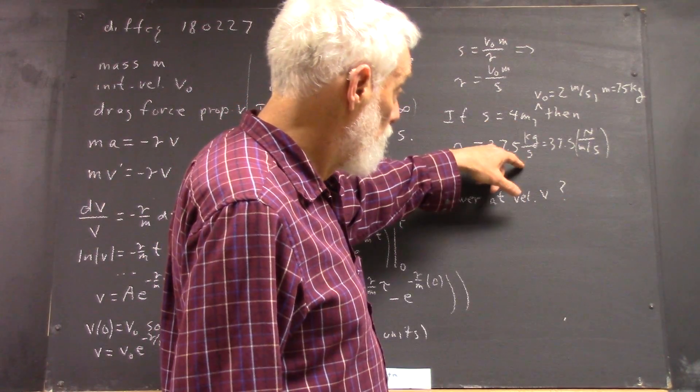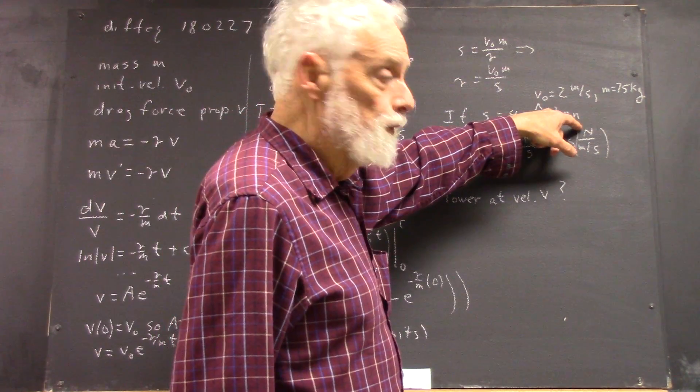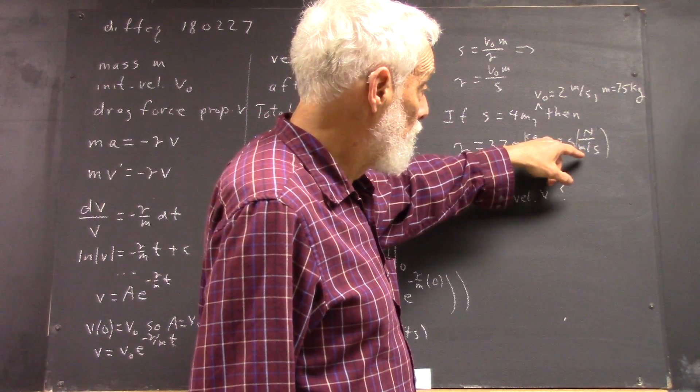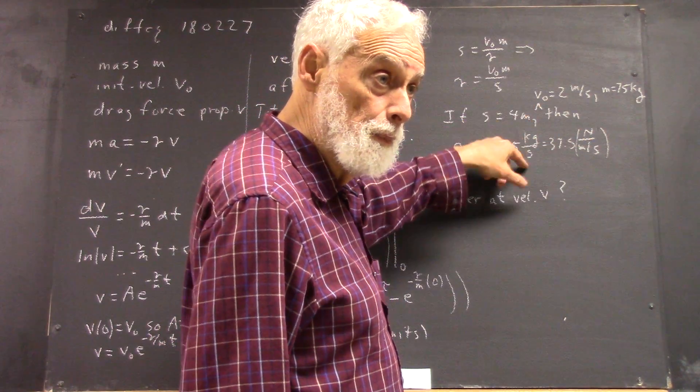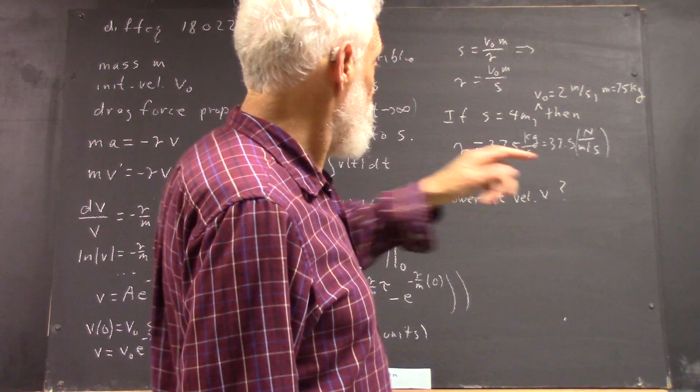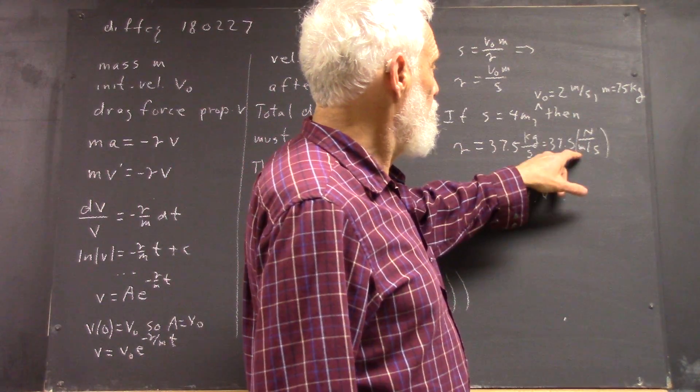And I mentioned kilograms per second. A newton is a kilogram meter per second. Dividing that by a meter per second, we get a kilogram per second. Okay, and this is the way we want to think about it.